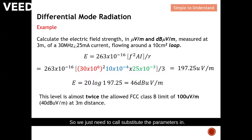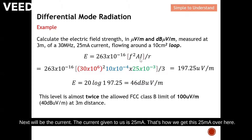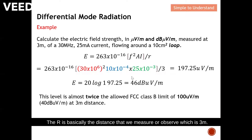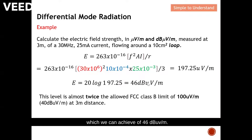We substitute the parameters into the equation. F is the frequency, which is 30 MHz. The area given is 10 centimeters squared, which we convert to meters squared. The current given is 25 milliamperes, and r is the distance of 3 meters. Punching into the calculator, we get 197.25 microvolts per meter. Since the question asks us to express in dB microvolts per meter, we apply 20 log of 197.25, which gives us 46 dB microvolts per meter.